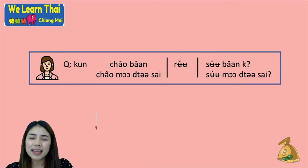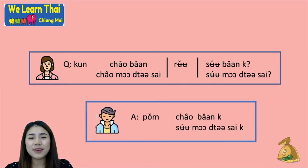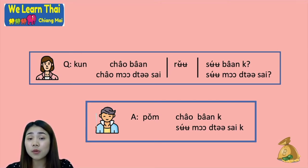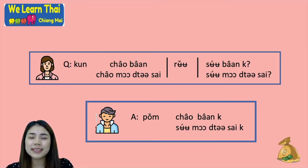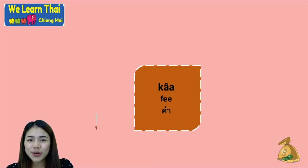You can also say คุณเช่ามอเตอร์ไซหรือซื้อมอเตอร์ไซคะ — do you rent a motorcycle or do you buy a motorcycle? For the answer, you can say ผมเช่าบ้านครับ if you rent the house, or ผมซื้อมอเตอร์ไซครับ meaning I buy a motorcycle.